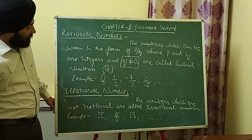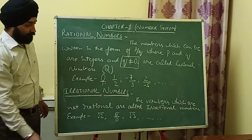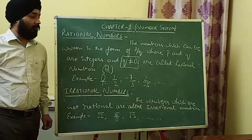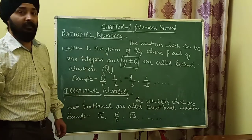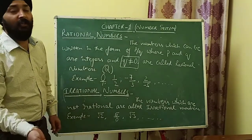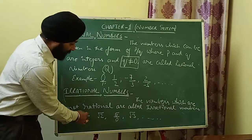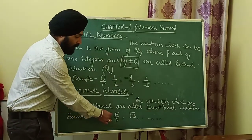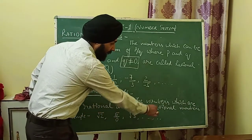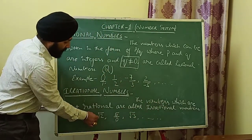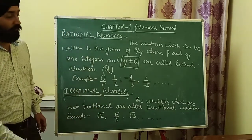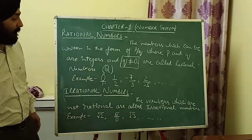Our next topic is irrational numbers. The numbers which are not rational are called irrational numbers. For example: √2, √3 and so on. Especially numbers that have a root sign — square root, fourth root, fifth root — are generally irrational.